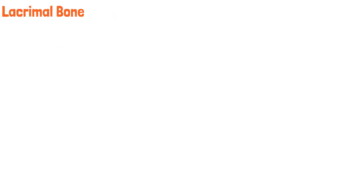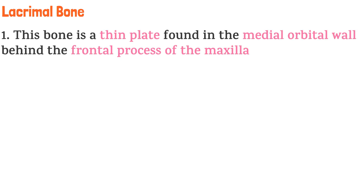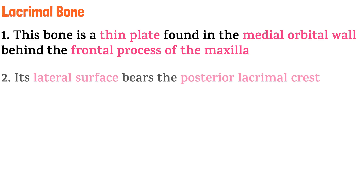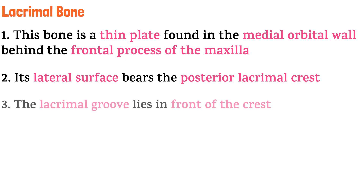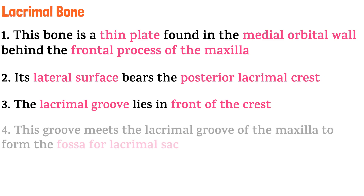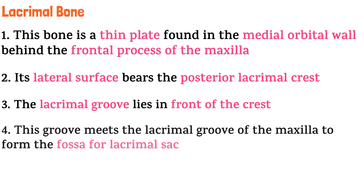Starting with the lacrimal bone — this bone is a thin plate found in the medial orbital wall, behind the frontal process of the maxilla. Its lateral surface bears the posterior lacrimal crest. The lacrimal groove lies in front of the crest, and this groove meets the lacrimal groove of the maxilla to form the fossa for the lacrimal sac.